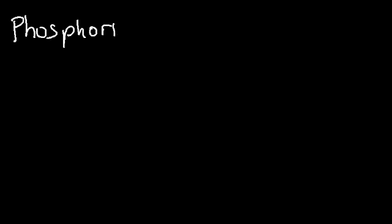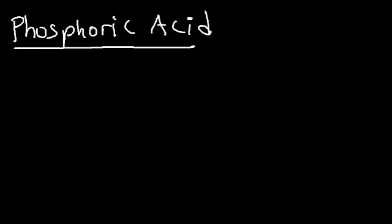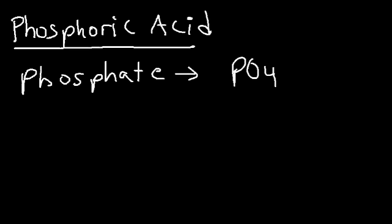How would you write the formula for phosphoric acid? Let's work backwards. The first thing you need to find is the polyatomic ion associated with phosphoric acid. We don't have the word 'hydro', so we know it's not a monatomic ion — it has to be polyatomic. Because we see the '-ic' part of the acid, we know it's associated with '-ate', so it's going to be phosphate. The formula for phosphate is PO₄³⁻.